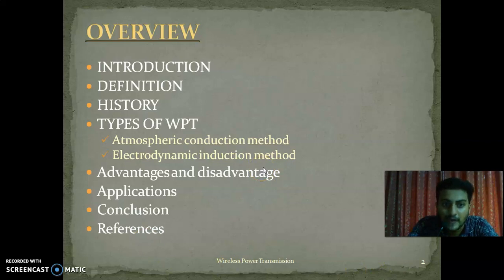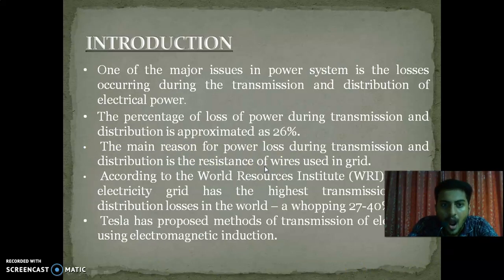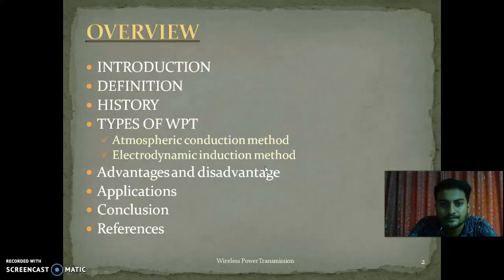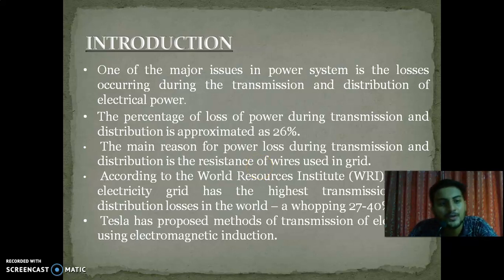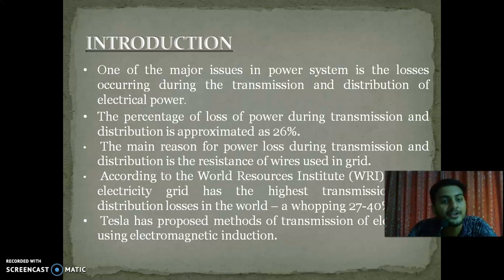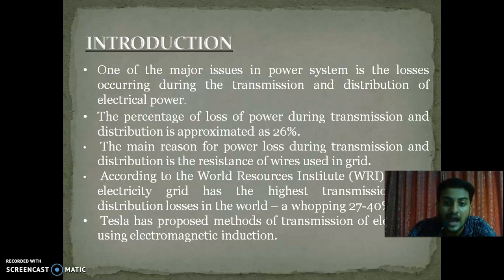First, we can go to the introduction. One of the major issues in power systems is the losses occurring during the transmission and distribution of electric power. The percentage of loss of power during transmission and distribution is approximated as 26%, that is the world average. The main reasons for power loss during transmission and distribution is the resistance of wires used in the grid.